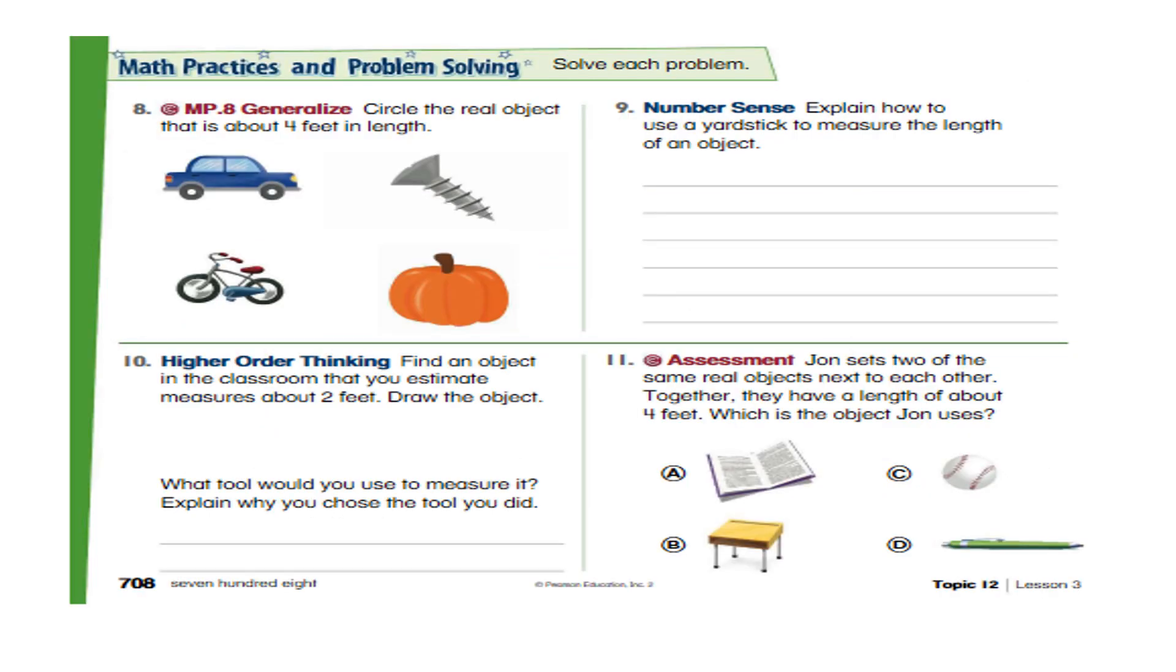Okay. On the next page, circle the real object that is about four feet in length. So, which one is four feet in length? Do you think your car is four feet? Or do you think this short small nail is of four feet? This one or this one? So, circle the correct object.